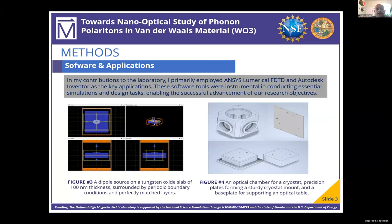For my methods, I've been mainly using software over the course of these 10 weeks, specifically ANSYS Lumerical FDTD, which is a software that utilizes Maxwell's equations to describe the behavior of electromagnetic waves. I've also been using Autodesk Inventor to design the equipment that will be utilized within the lab. For the numerical simulation, I have essentially simulated an atomic force microscope emitting an electromagnetic wave on the surface of a tungsten oxide slab of 100 nanometer thickness, surrounded by periodic boundary conditions.